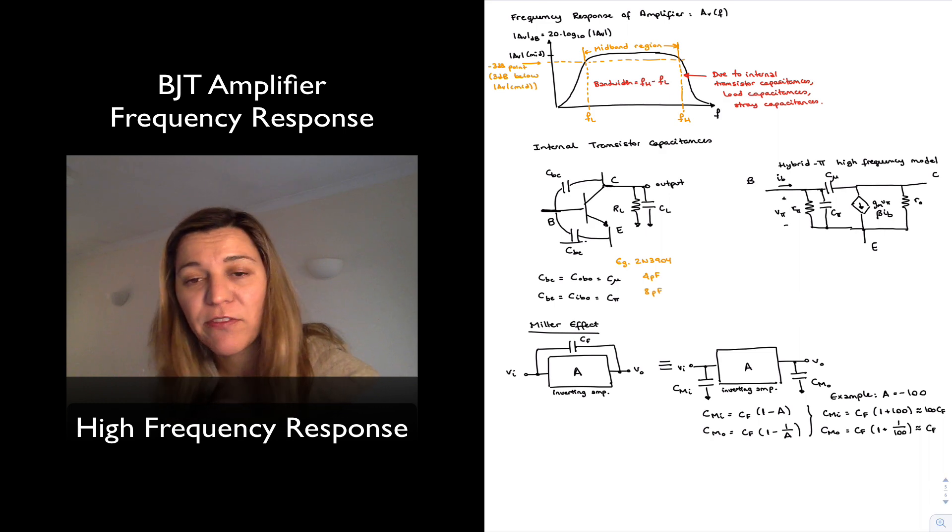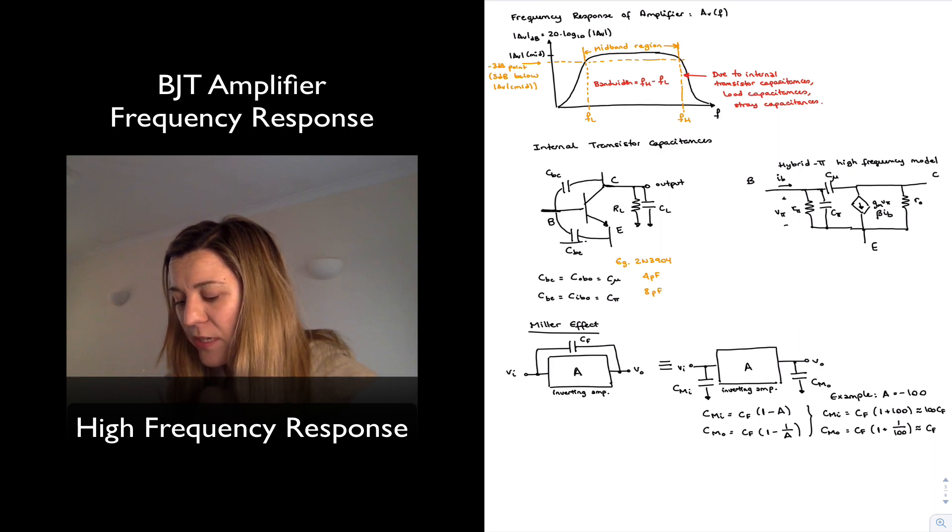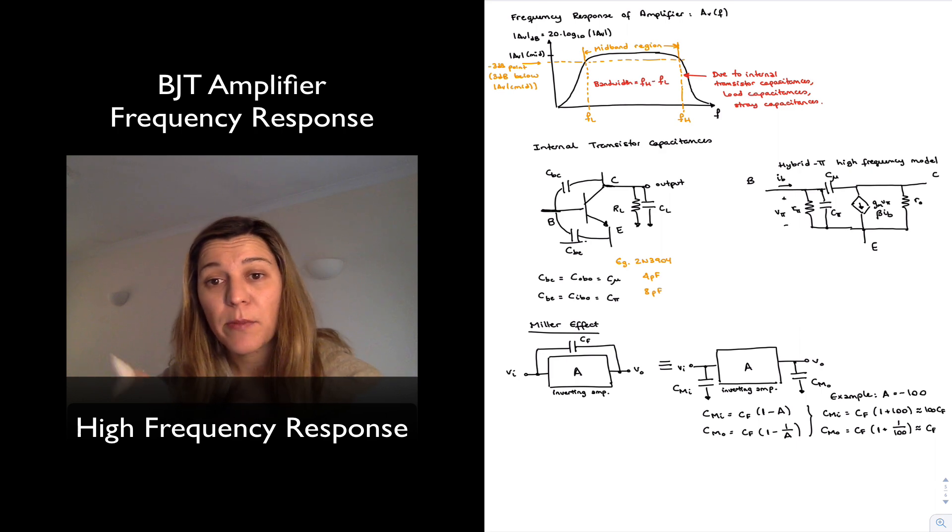So basically for an amplifier of a certain gain, what has happened is that if we connect a capacitor across the feedback path from input to output, it behaves as if we had two capacitors...